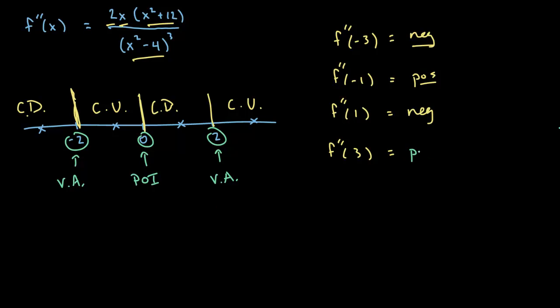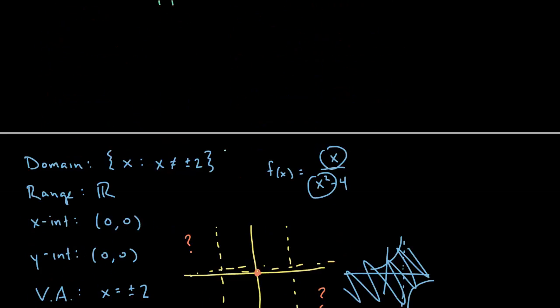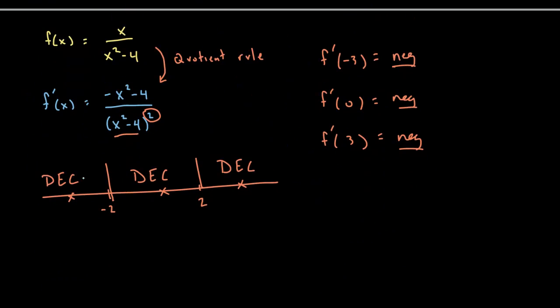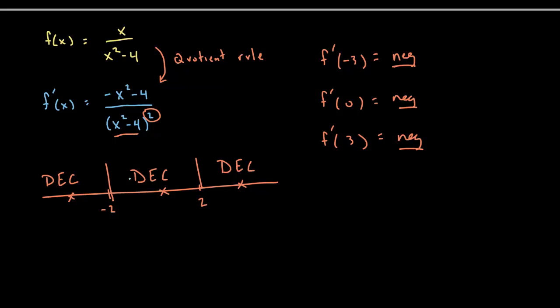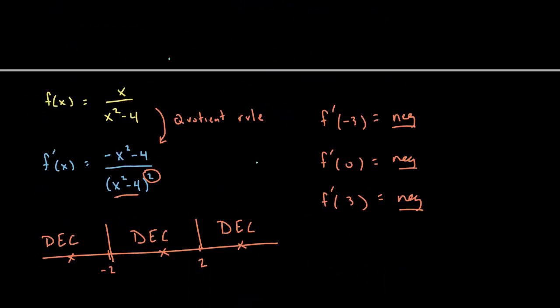With that, we've got a lot of information. We have the domain, range, intercepts, asymptotes, and no critical values — which is okay. We know it's decreasing everywhere. There's no relative extrema because the function never goes from increasing to decreasing or vice versa — it's decreasing throughout. We've got the concavity figured out and we know the point of inflection. So now it's just a matter of putting it all together.